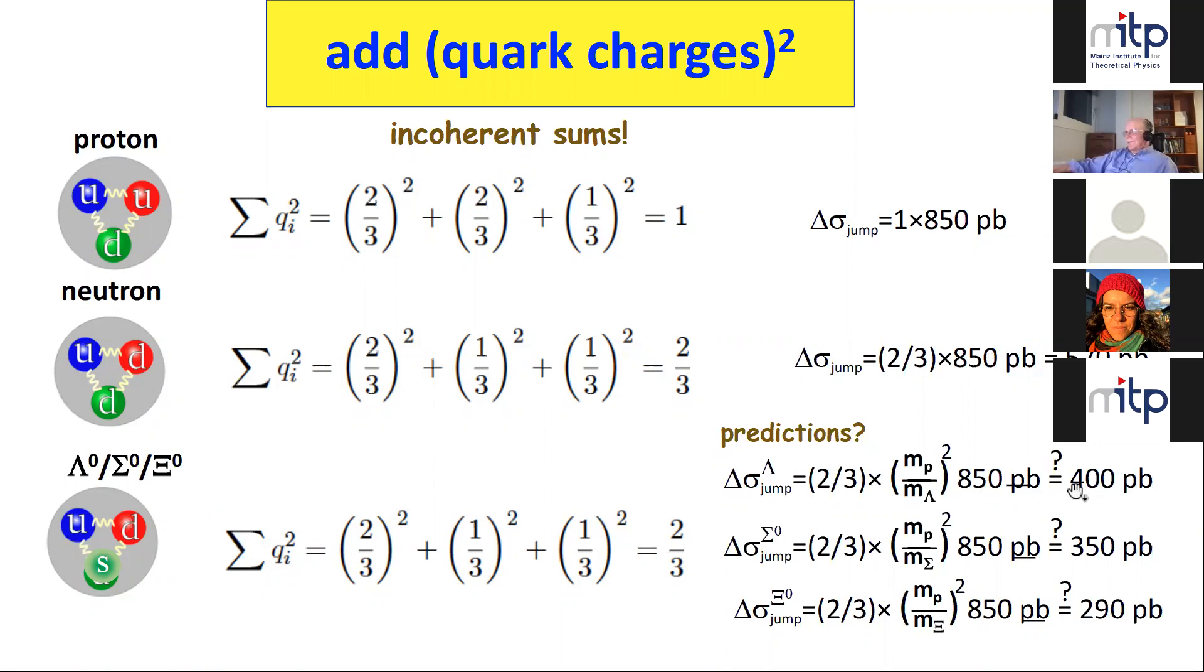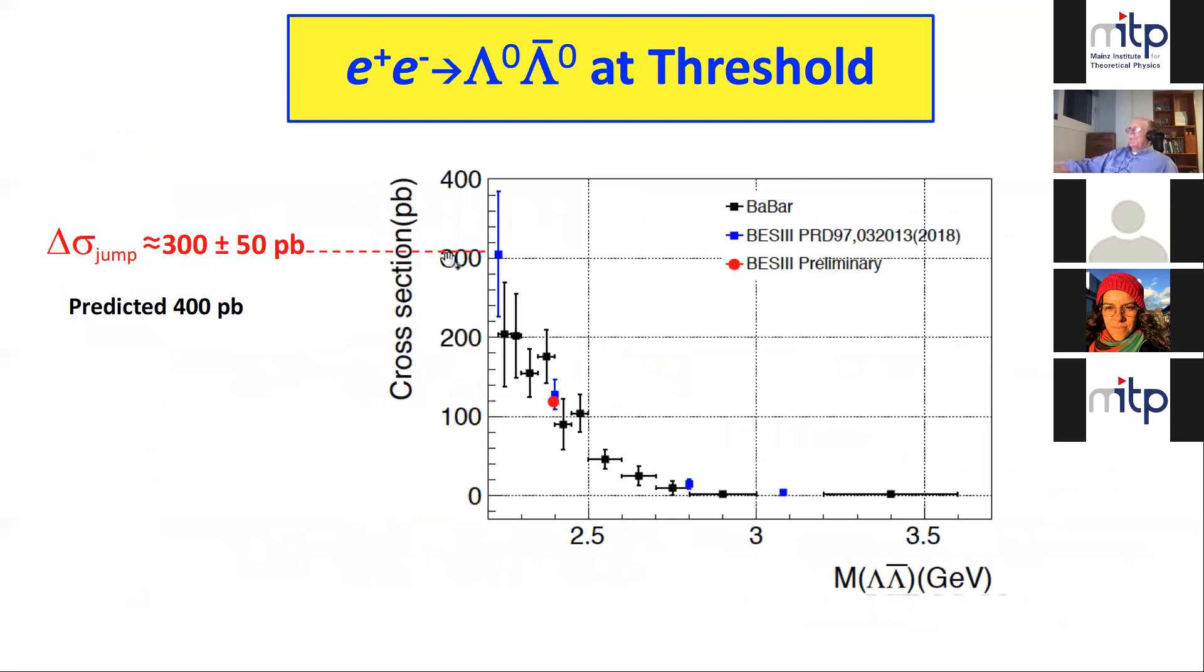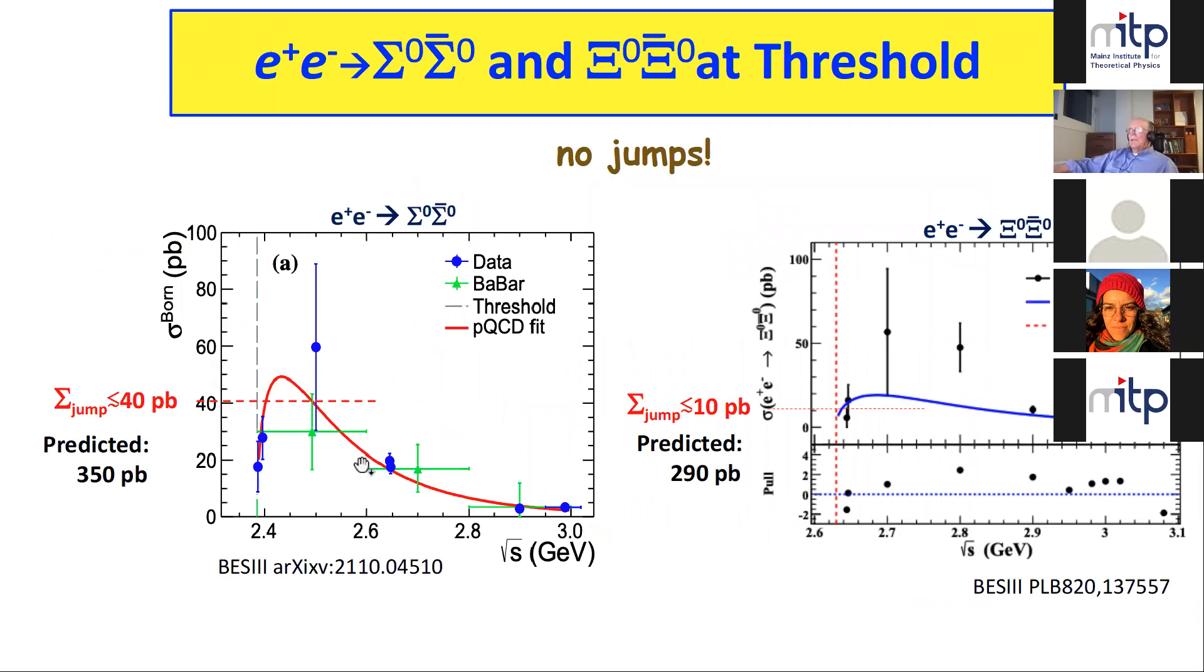This makes some predictions. For the lambda, you'd expect about 400 picobarns. For the sigma zero, you'd expect about 350 picobarns. Let's look at the lambda. We measured the lambda, and instead of 400, we measured 300. One MeV above the threshold, we get 300 picobarns. The previous prediction was 400 picobarns. What about the other ones? The sigma zero - there's no jump. It looks just like a theorist would draw. And for the cascade zero, there's no bump, no obvious bump. The cross-section is small, so no bumps at all.